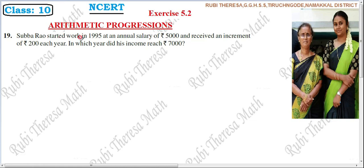Subha Rao started work in 1995 at an annual salary of Rs. 5000 and received an increment of Rs. 200 each year. So his annual salary — meaning salary per year — is Rs. 5000, and every year he gets a Rs. 200 increment.